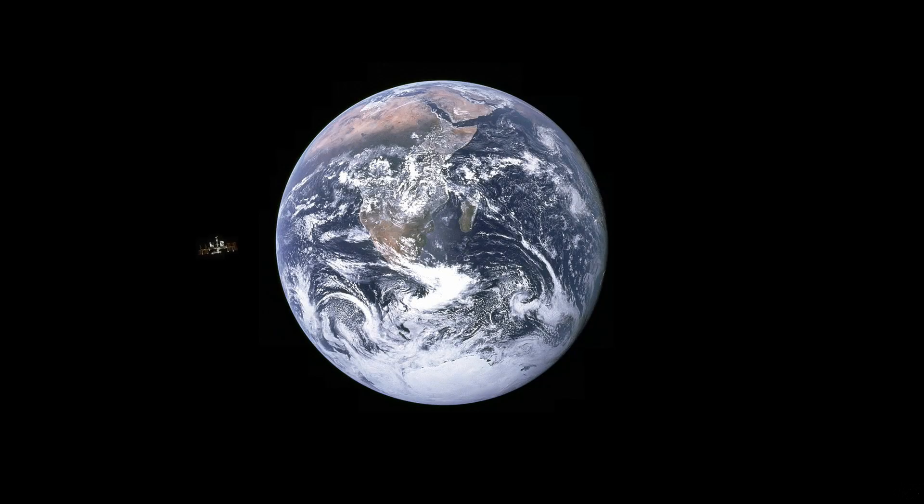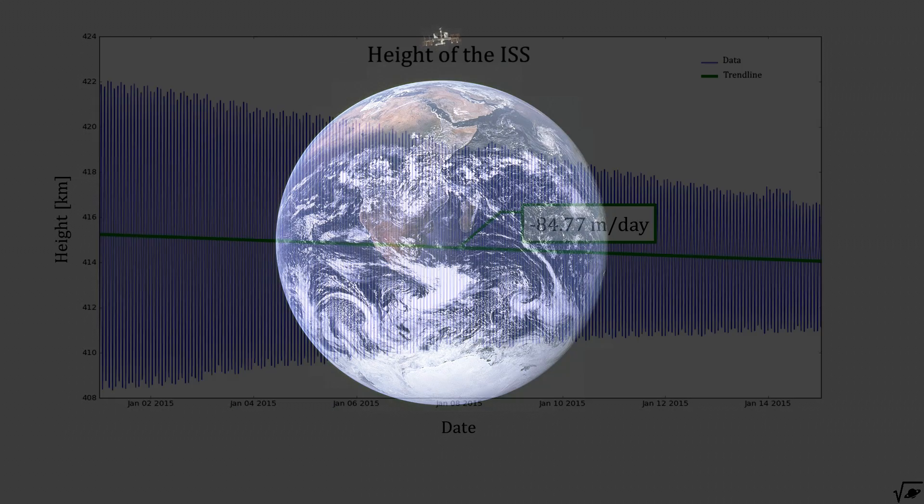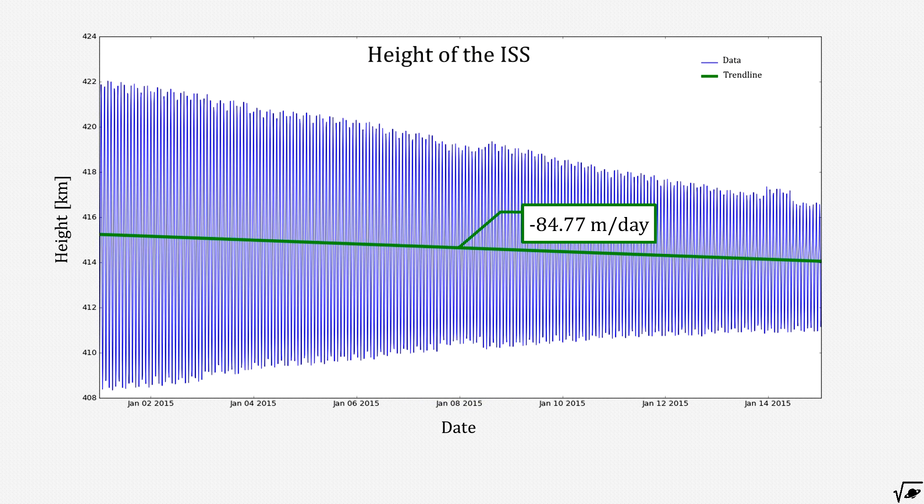So in short, how much drag has the ISS? Well, not that much. But still enough to make it lose 85 meters per day.